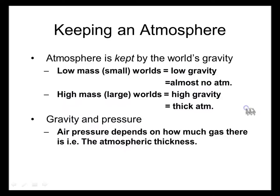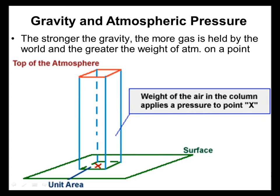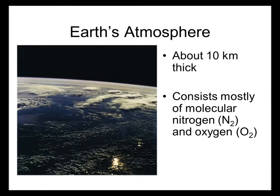So how do we have an atmosphere? Well, the atmosphere has to do with how much gravity a planet has. The smaller planets have less gravity, the larger planets have more gravity. The air pressure is going to depend on how much gas there is — the stronger the gravity, the more gas is going to be held to the planet, and the greater the weight of the atmospheric pressure on any point. Earth's atmosphere is about 10 kilometers thick and consists of mostly nitrogen and oxygen.